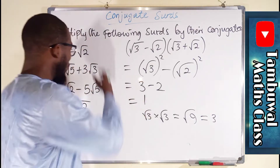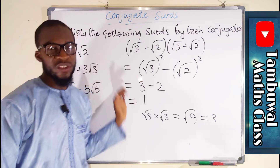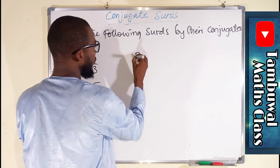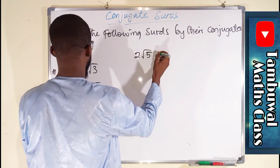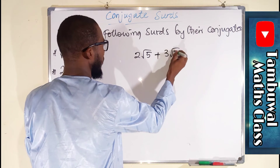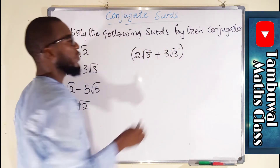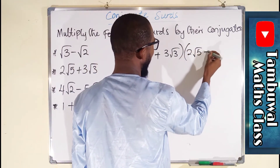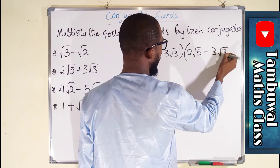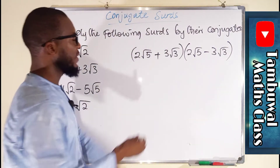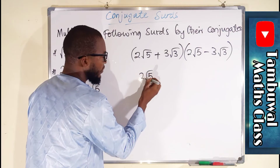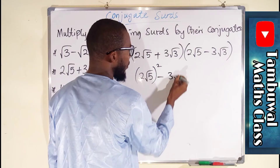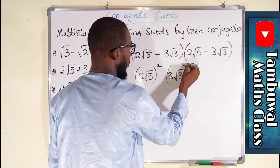Let us move on to the second one: 2√5 plus 3√3. The conjugate of this will be 2√5 minus 3√3. Applying difference of two squares, we take the first term (2√5) squared minus the second term (3√3) also squared.